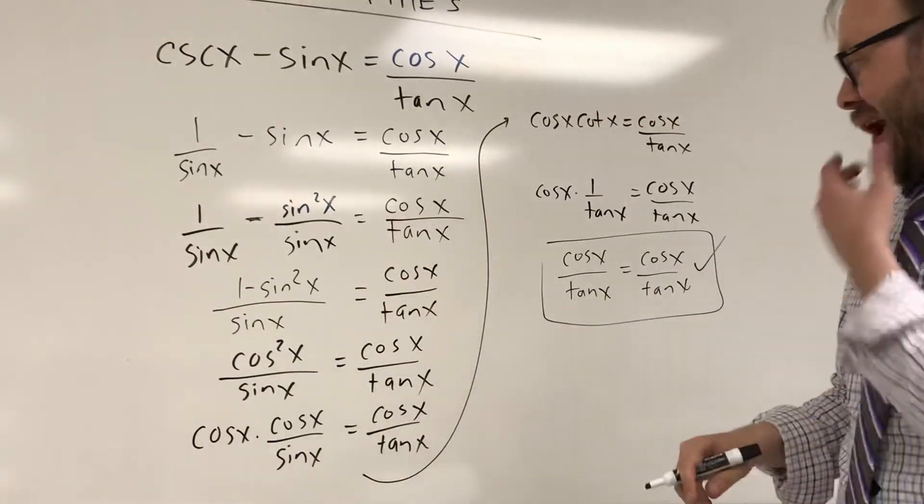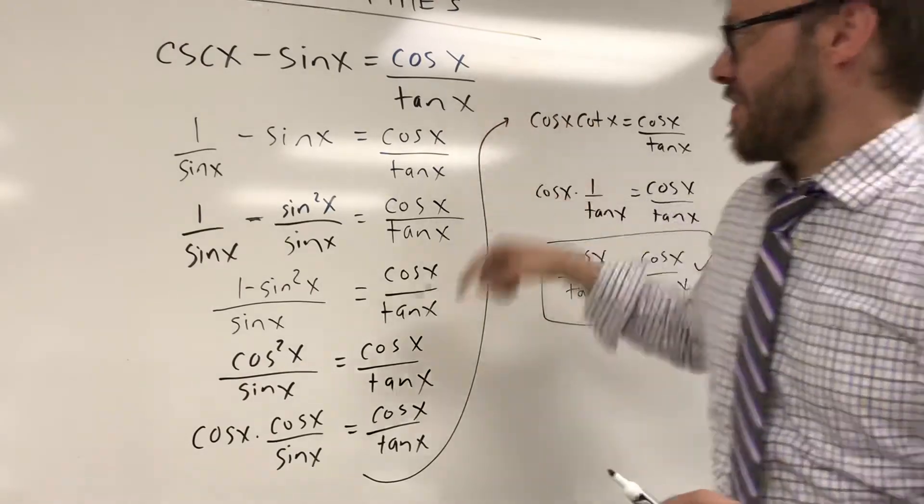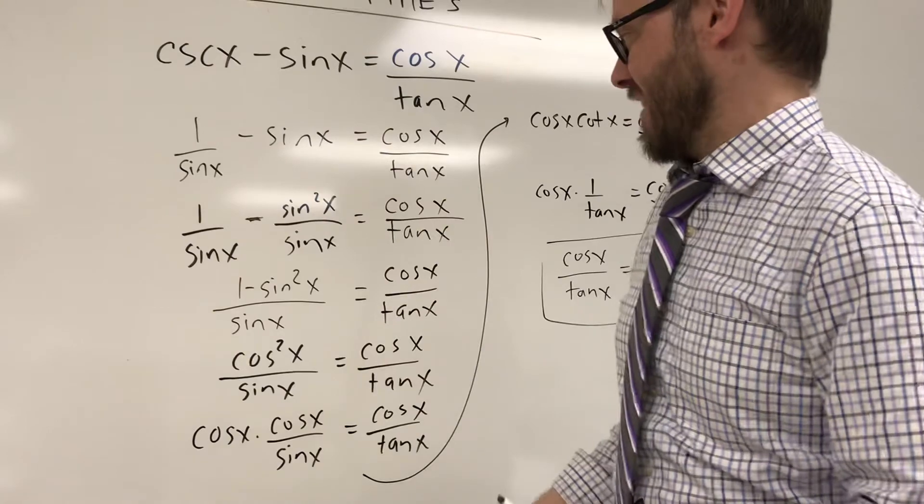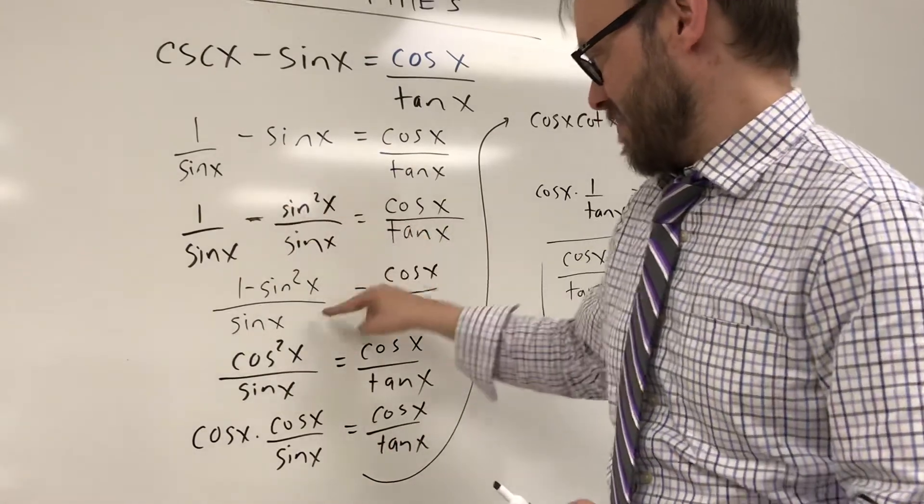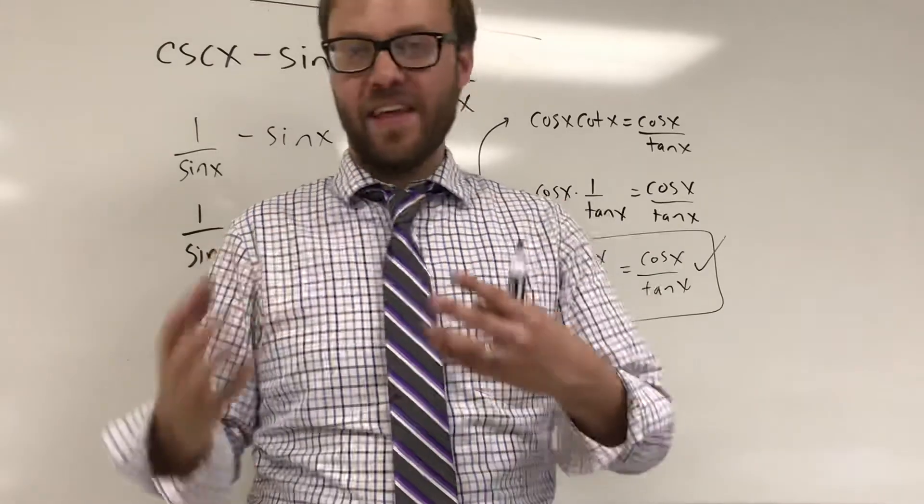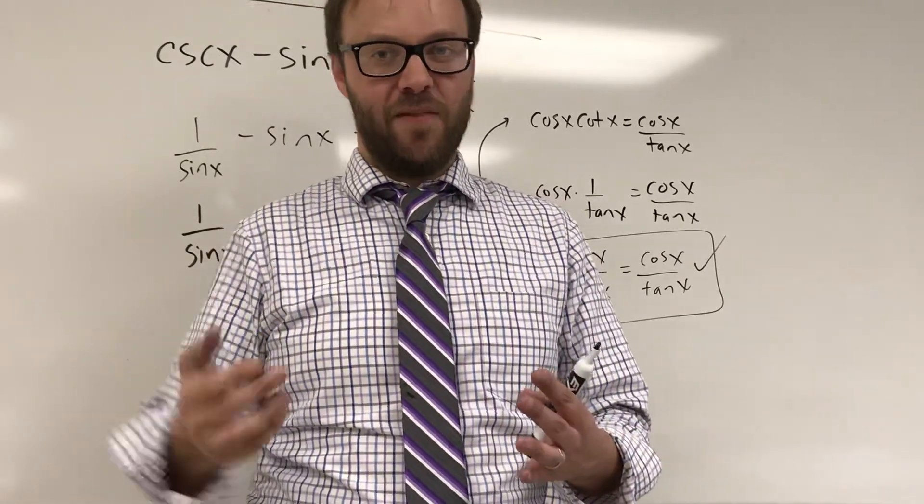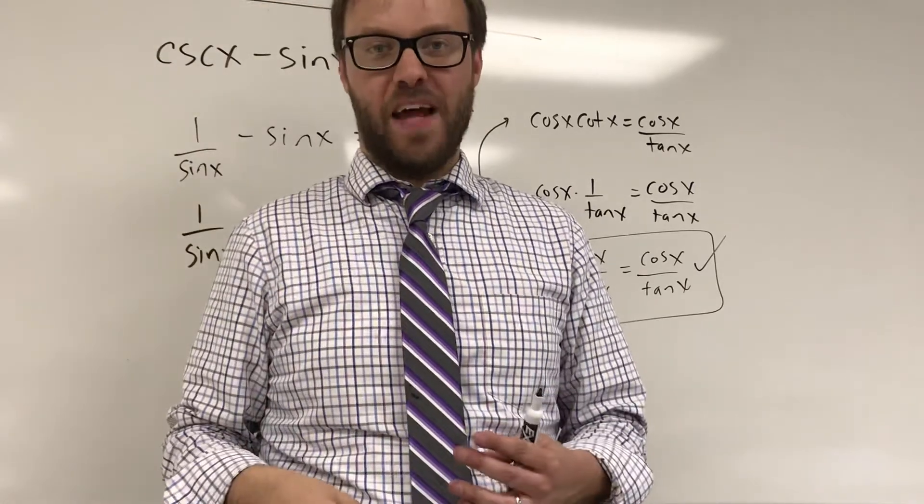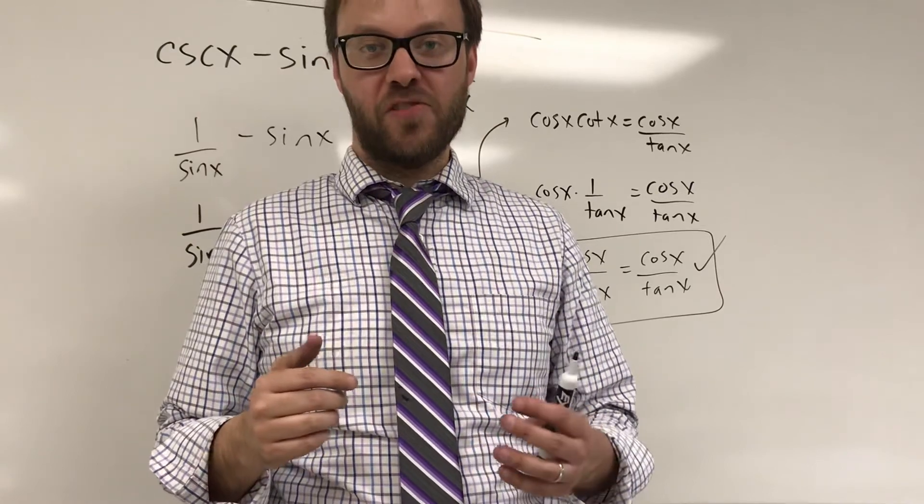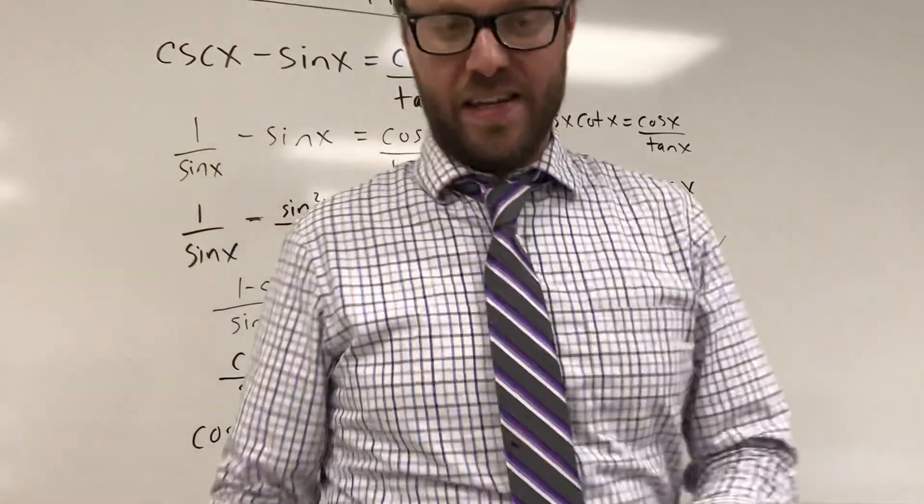And again the big idea here is from each step to the next I should be able to see this got replaced with that. This got replaced with that. We combined these to be this. You should be able to follow from step to step. If you're doing two or three things in a step you're not really verifying it, you're just kind of saying well I know I need to get to the bottom so I'm gonna skip down there. So again these are proofs. You'll know what the answer is—that helps. But you do need to show each step and the entire equation needs to be written each time.